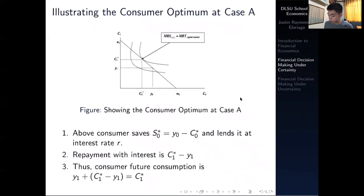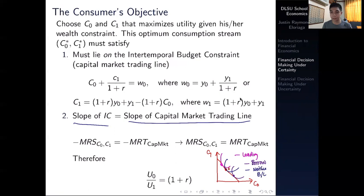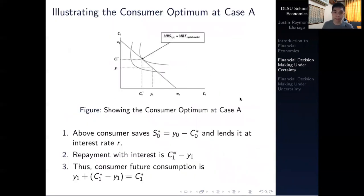The capital market trading line is a downward-sloping straight line when borrowing and lending rates are the same. This implies the slope of the indifference curve equals the slope of the capital market trading line: the negative of MRS equals the slope, so MRS(C0, C1) equals the marginal rate of transformation in the capital market, which is 1 + R.